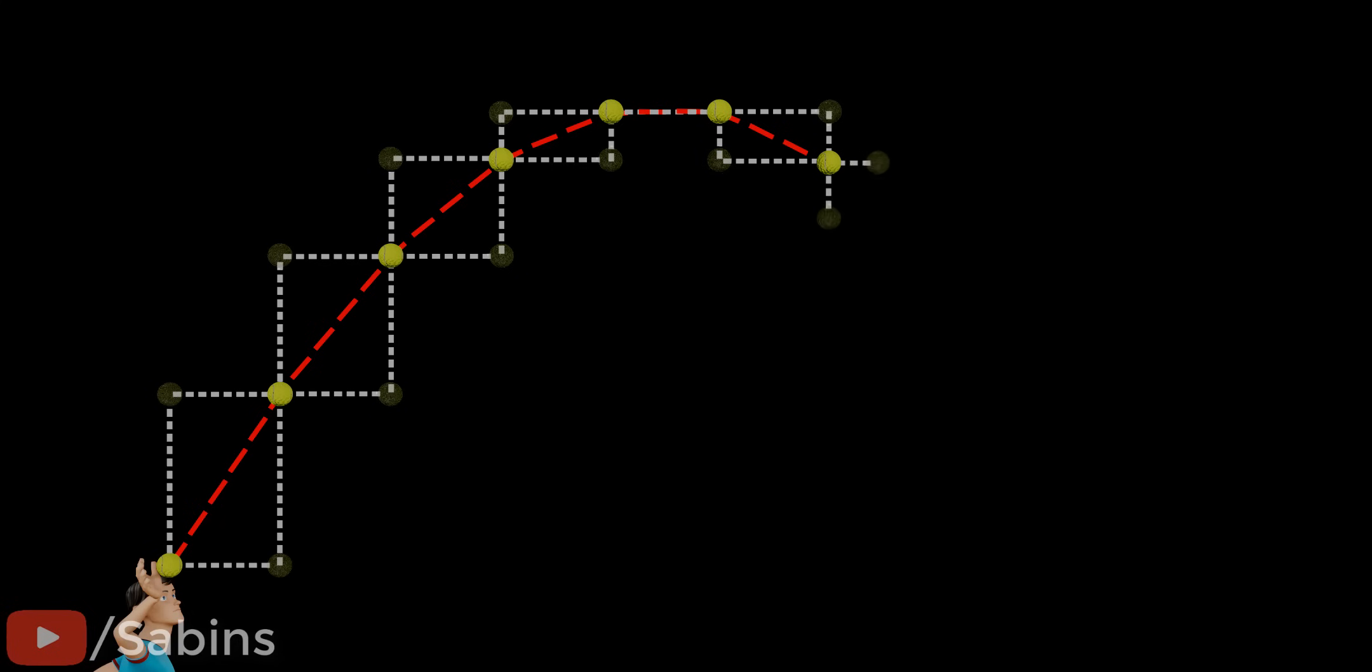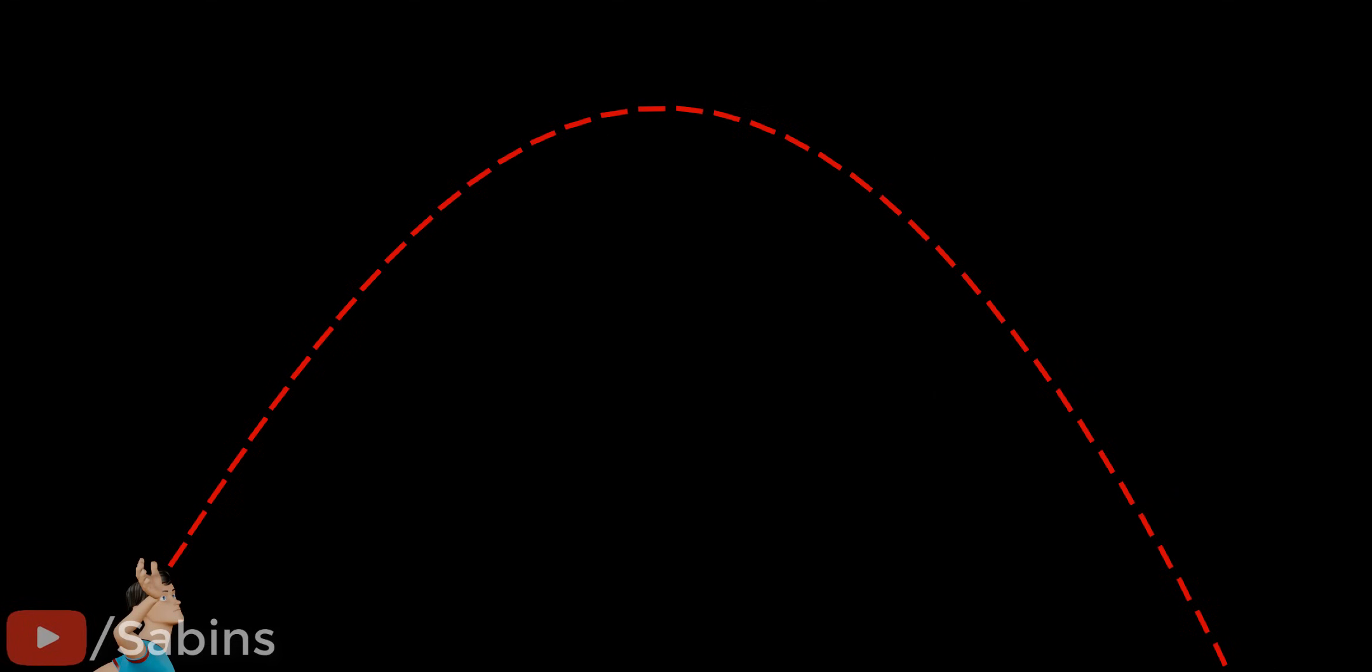During the descent, the gravitational force and velocity are in the same direction, so the vertical velocity will keep increasing. This will be the final shape traced by the ball. The shape of this trajectory is known as a parabola.